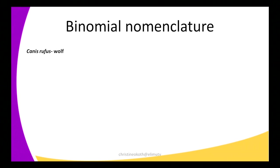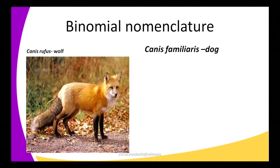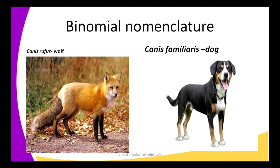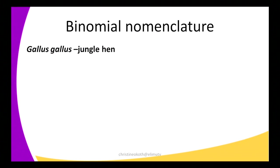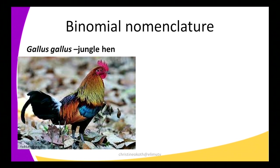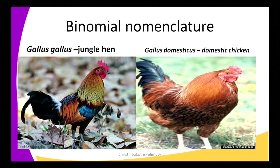Another example: we have Canis rufus, which is a wolf, and Canis familiaris, which is a dog. If you observe the first name — the genus — they are all the same, meaning they come from the same genus, which is Canis. The species is the one which is different: rufus and familiaris. Then we have Gallus gallus, which is a jungle hen, and Gallus domesticus, which is a domestic chicken. They are of the same genus but have different species names.